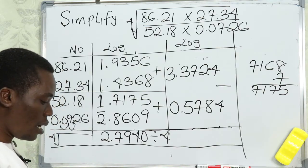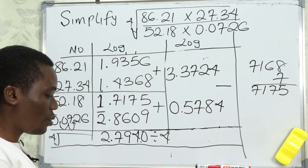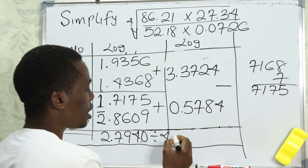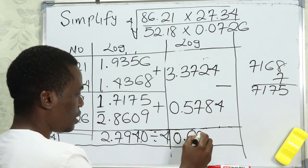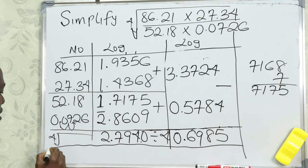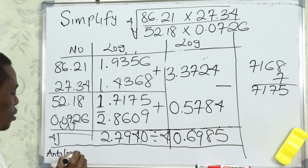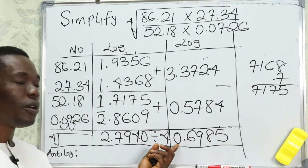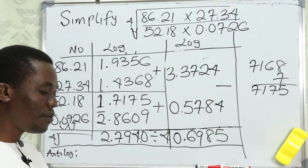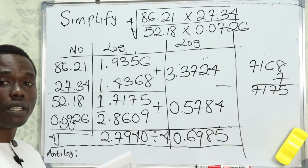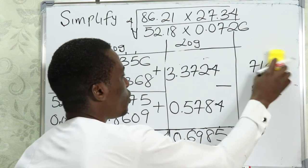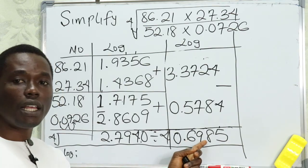Using a calculator: 2.7940 divided by 4 gives us 0.6985. Having gotten that, we now find the antilog of this value. Remember the characteristic here is 0. We go to the antilogarithm table — a different table from the log table — and look at the antilog of .69 under column 8, with a difference of 5.